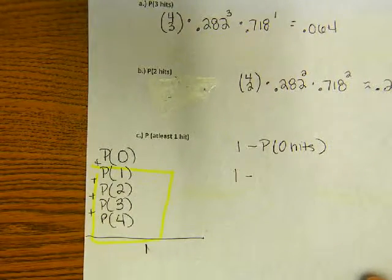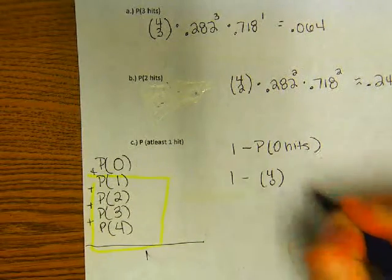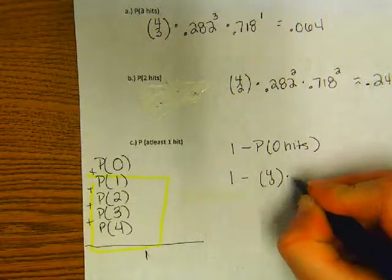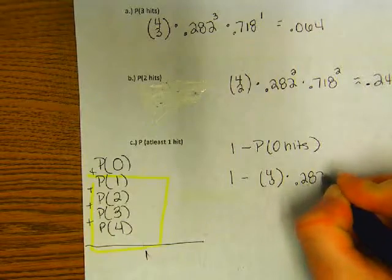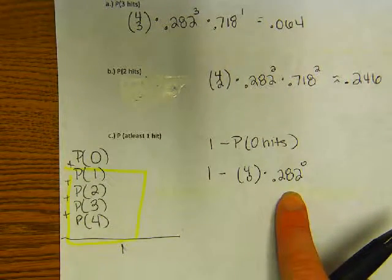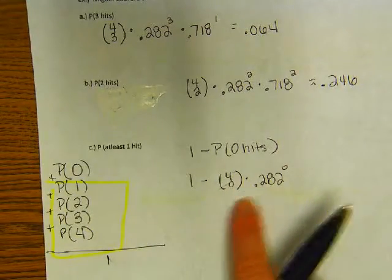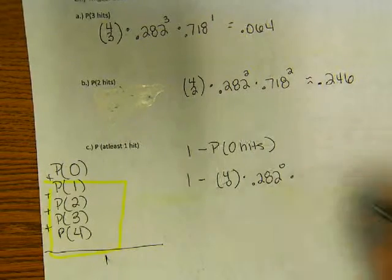Now I'm going to write it out, but let's remember, 4C0 is one, correct? And I can write out times .282 to the zero, but what is that? Just, not zero, but one. So this stuff doesn't matter. He's not getting any hits.